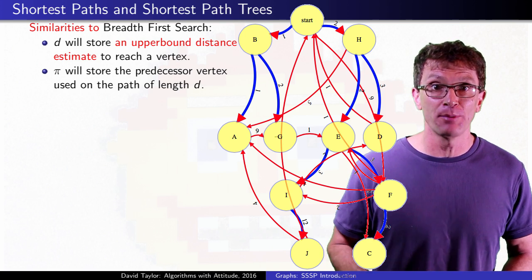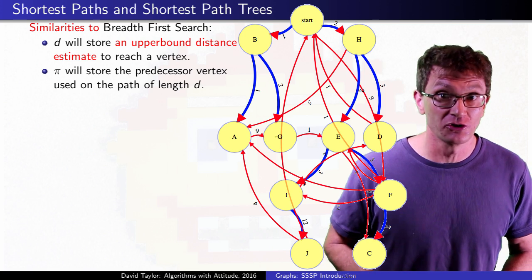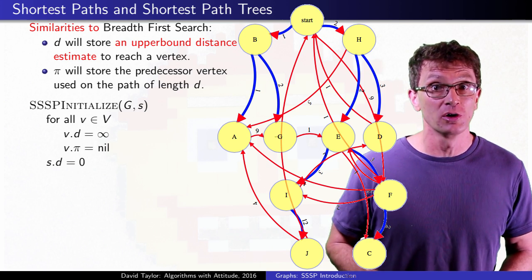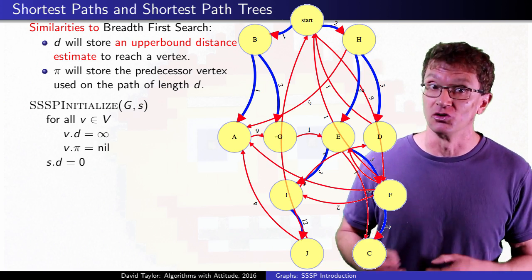To make sure that we start with valid upper bounds, just like in breadth first search, initialize everything to infinity except our start node, which we can get to with a path of weight 0.